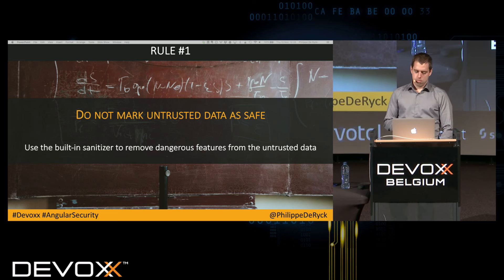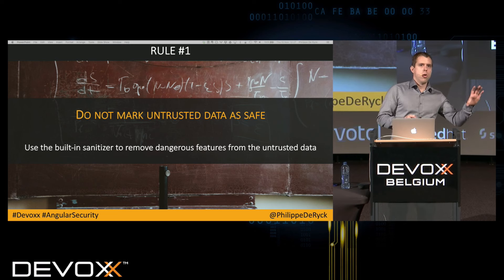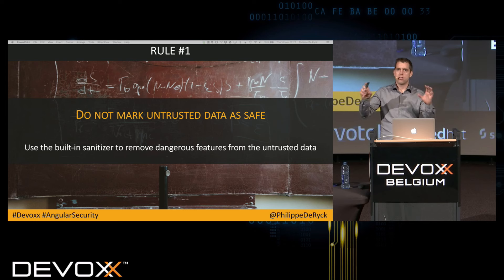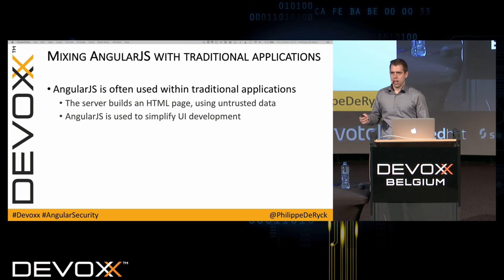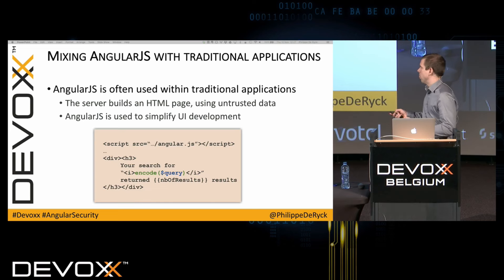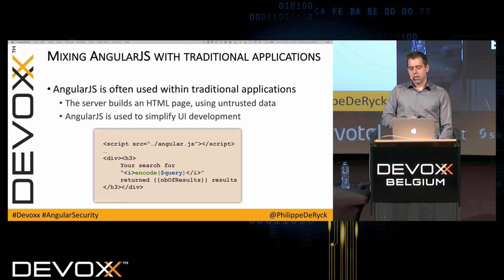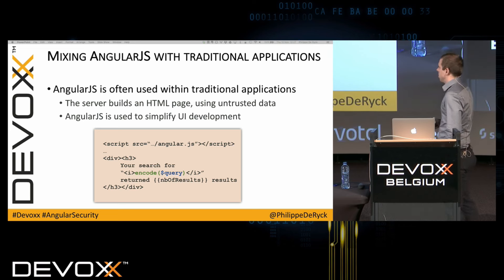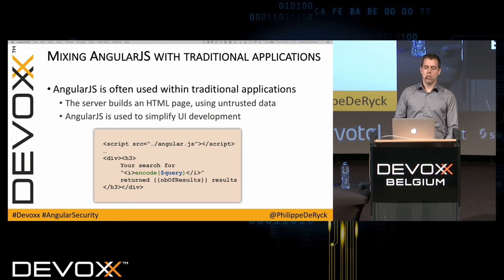There's actually a middle road between a pure client-side Angular app and the old server-rendered application: a mixed environment where you have a traditional PHP or JSP application you can't rewrite overnight, but you start using Angular for certain parts. In this setting, Angular will still protect you against XSS when you bind data with Angular — but since the server still injects variables into the HTML sent to the client, the server also needs to do XSS protection. You need to cover two bases.